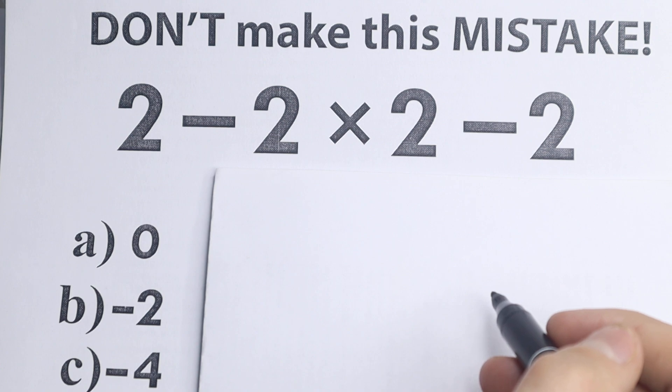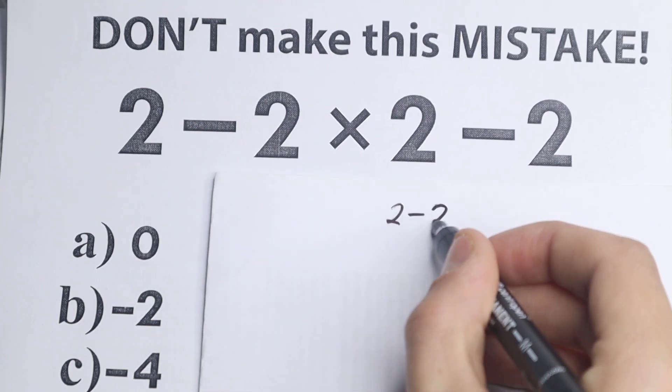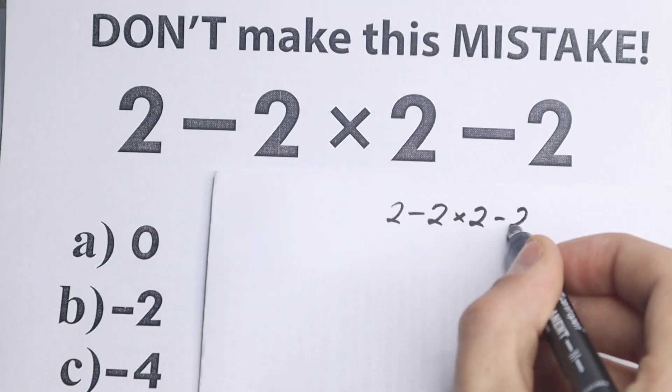We have options A, B, and C. I suggest you choose one option - what do you think is the correct answer - and write your answer in the comment section. So we have this problem. I'll write it right here: 2 - 2 × 2 - 2.